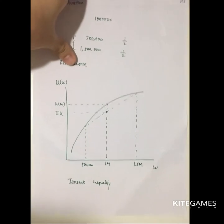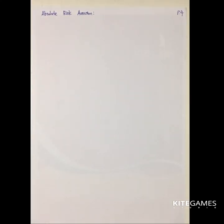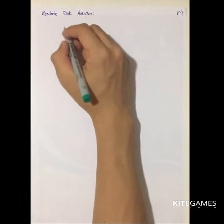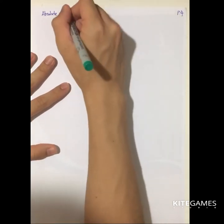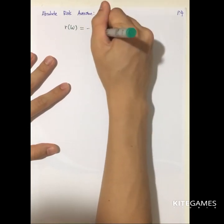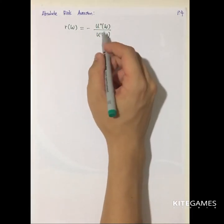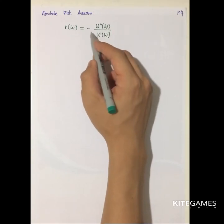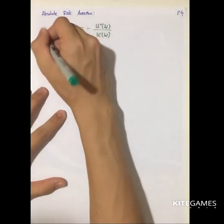Now how do we measure risk aversion? The first measure is absolute risk aversion, defined as negative U''(w) divided by U'(w). Since U''(w) is negative for a concave function, we add the negative sign to make it positive. The usefulness of absolute risk aversion is that we can use it to calculate the insurance premium — the amount one is willing to pay to avoid risk.